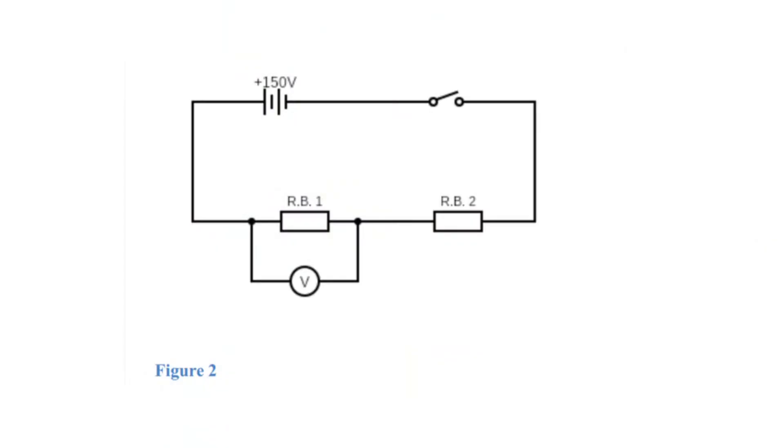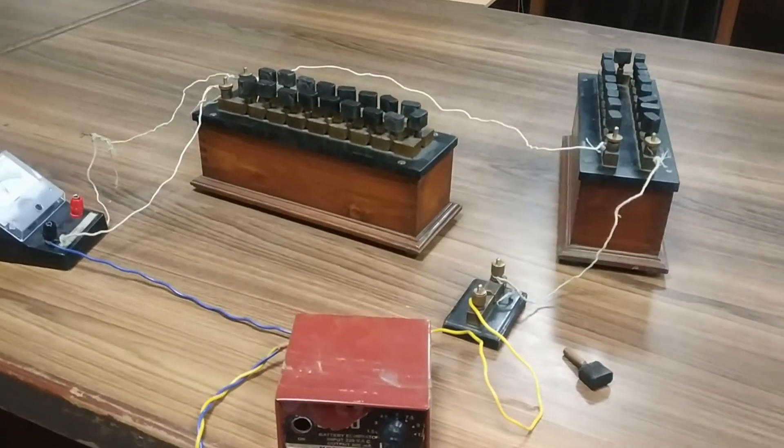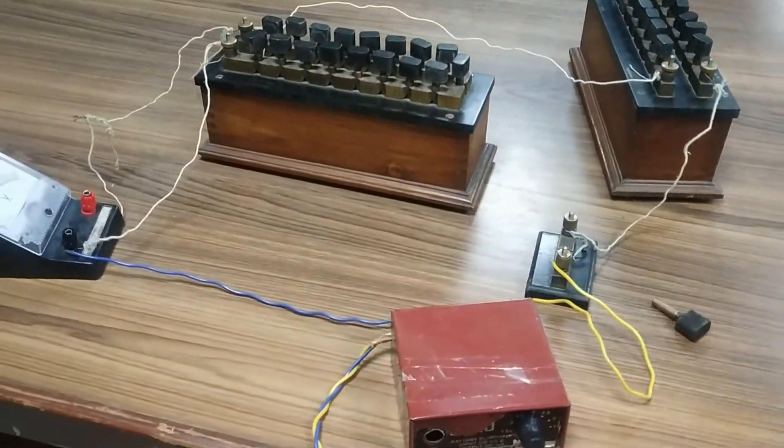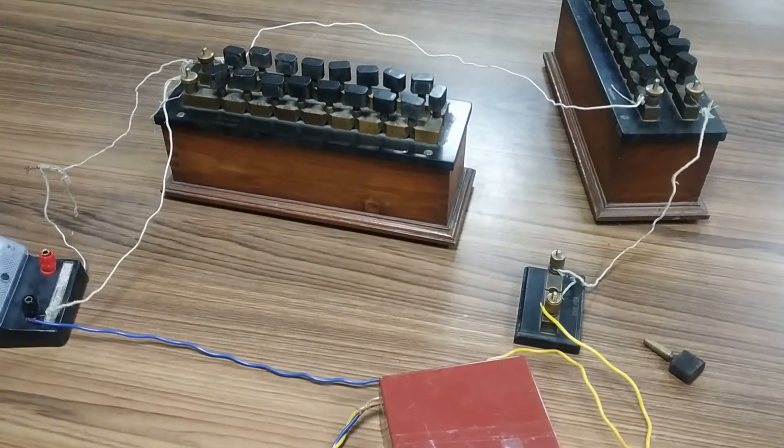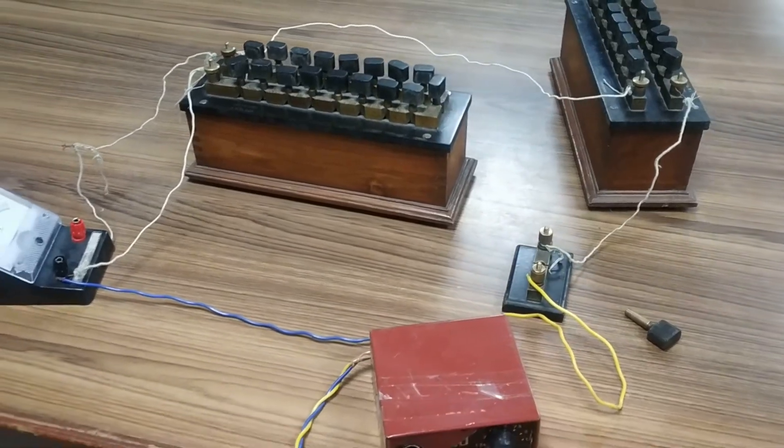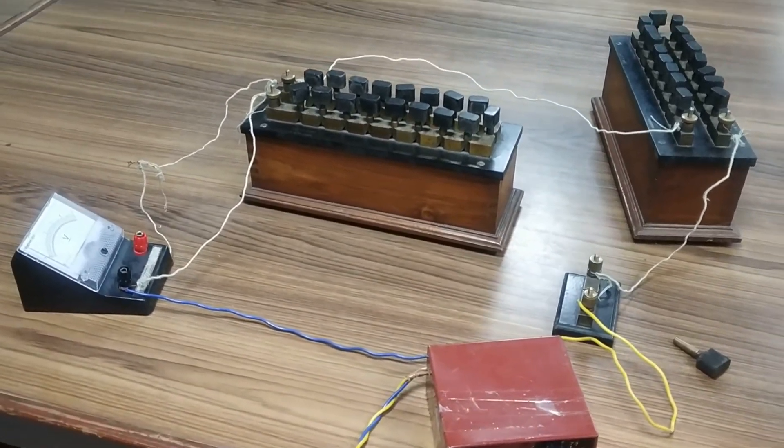Step 2, we will measure the potential drop across resistance. So, for this, we have to make the connections as shown in figure. Here, we have connected two resistance boxes in series with the battery and we have also connected a voltmeter parallel to one resistance box.